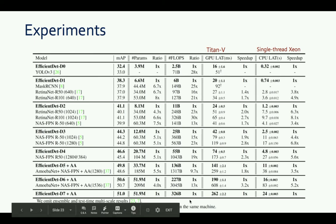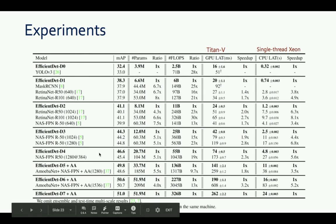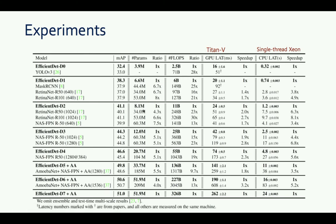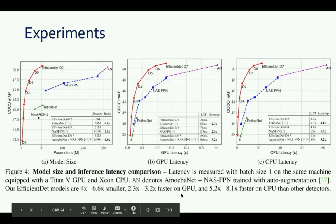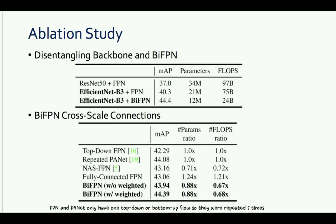Looking at the experimental results, models are compared at similar mAP score ranges. Within any mAP range, EfficientDet uses far fewer parameters, has much lower FLOPs, and much lower GPU and CPU latency compared to other models. As you want higher and higher mAP, other models scale up their parameters and latency considerably, whereas EfficientDet remains much more efficient. The authors also conduct ablation studies on the backbone, the BiFPN design, and the weighted feature fusion scheme.